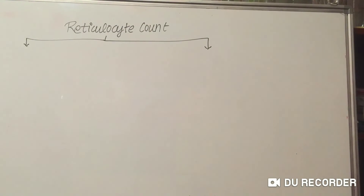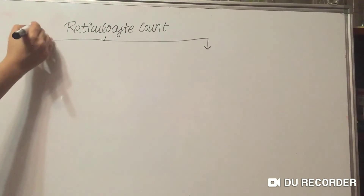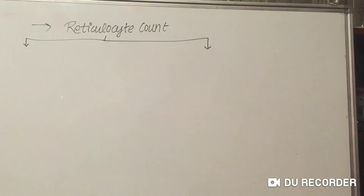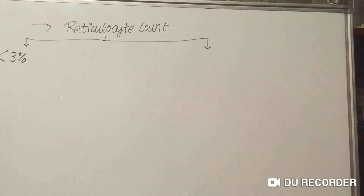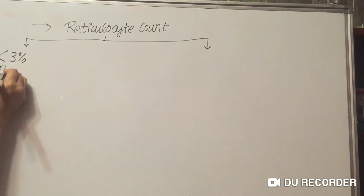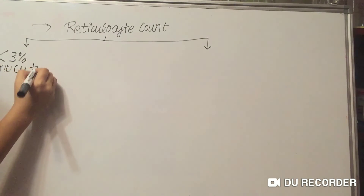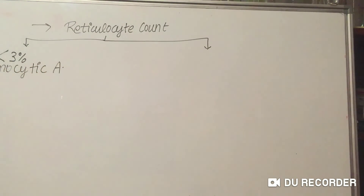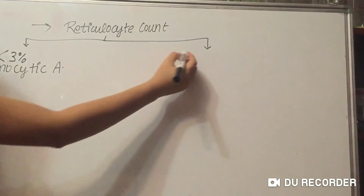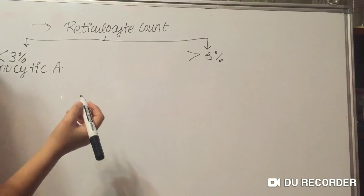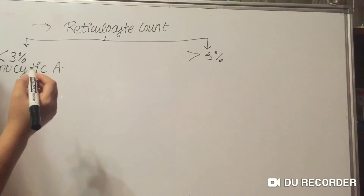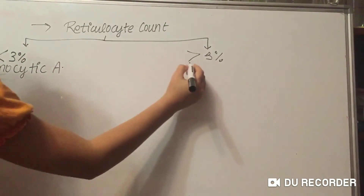After checking MCV, for further investigation we will check reticulocyte count. If reticulocyte count is less than 3%, it is known as normocytic anemia. If reticulocyte count is more than 3%, it is known as intravascular hemolysis or extravascular hemolysis.